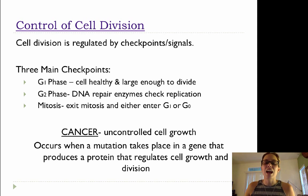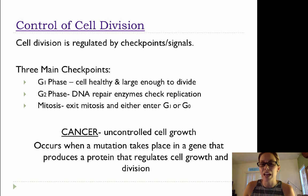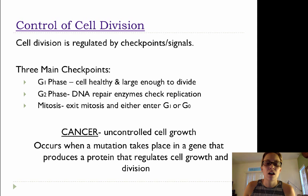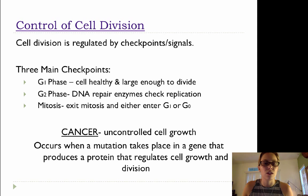At the end of G2, we've got DNA repair enzymes coming in to check replication — double-checking that DNA replication has gone off without a hitch. And then we can enter mitosis. If the checkpoint at G1 goes well and the checkpoint at G2 goes well, we will then enter mitosis.